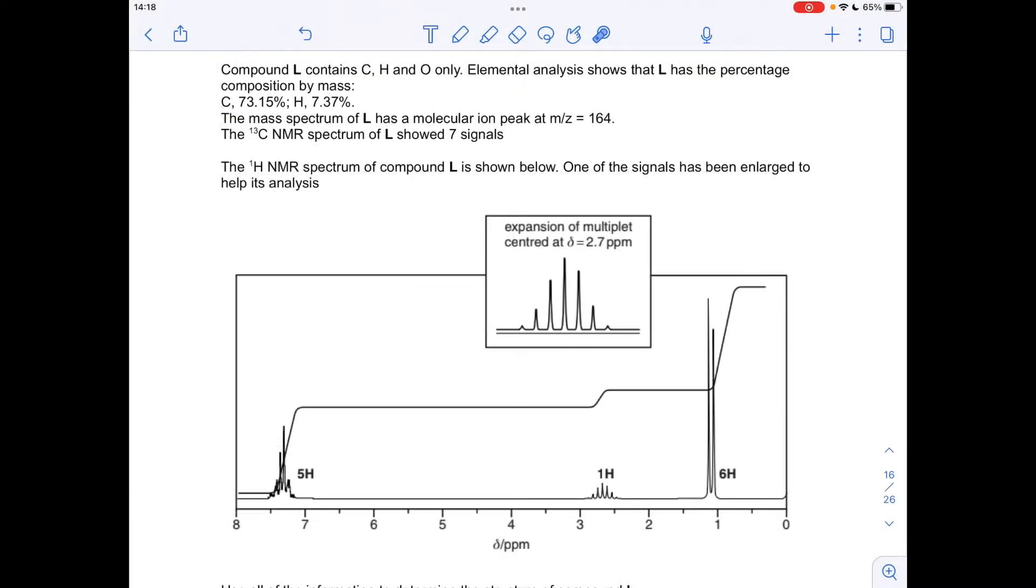Okay, so I'll make a start. The first thing I'm going to do is calculate the empirical formula from the percentage composition by mass. You'll notice we haven't got the oxygen, so to get the percentage oxygen we just take these away from 100.